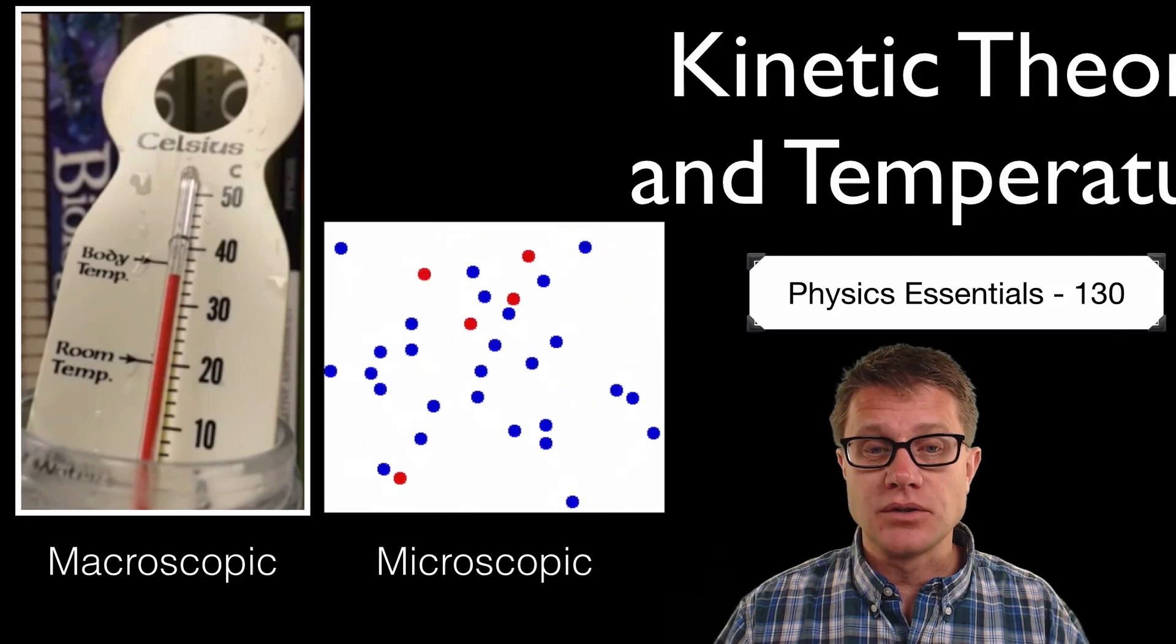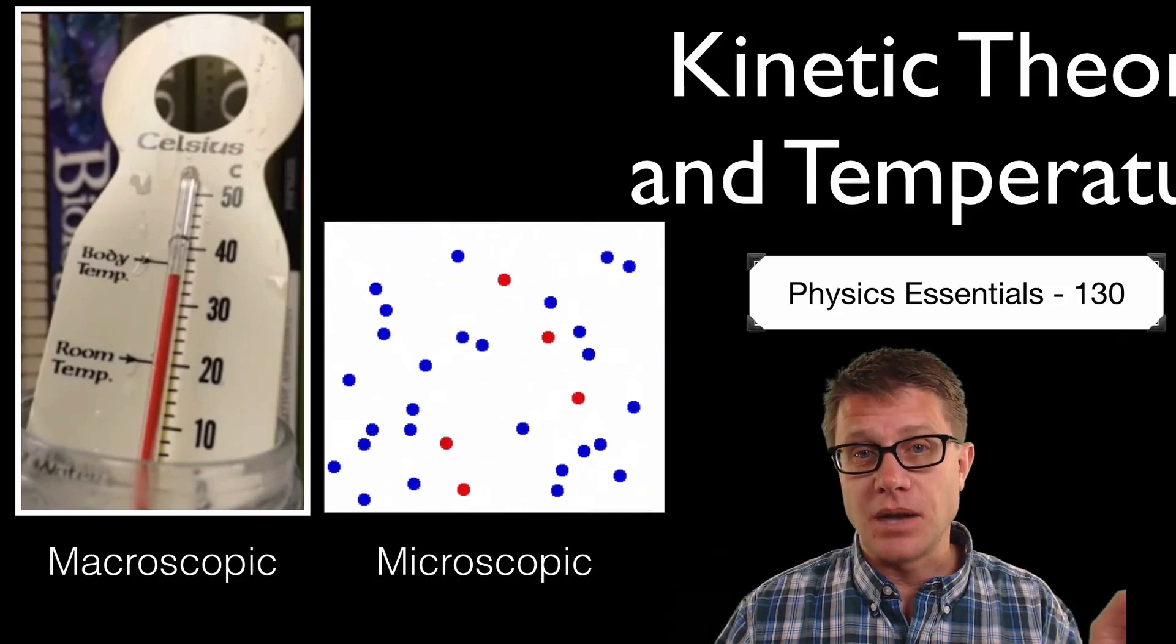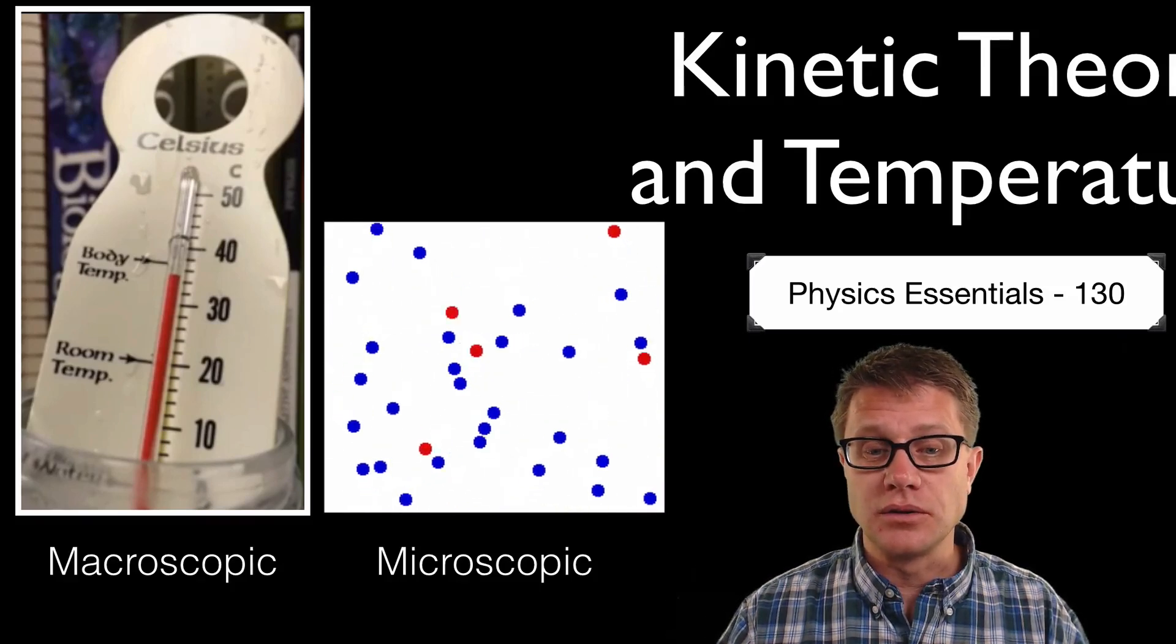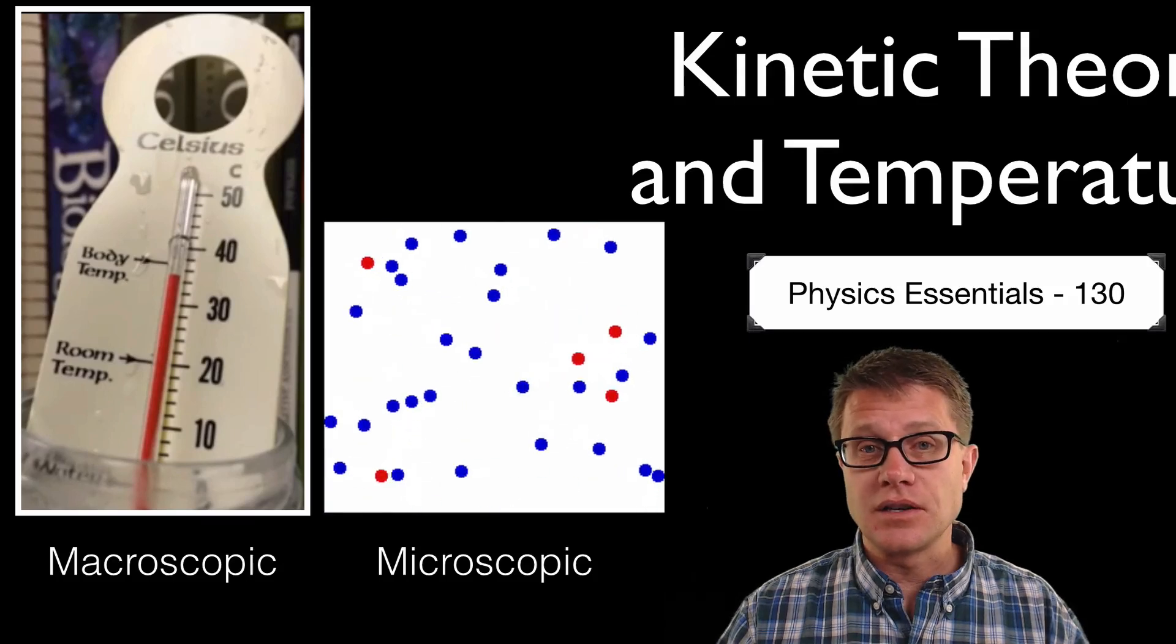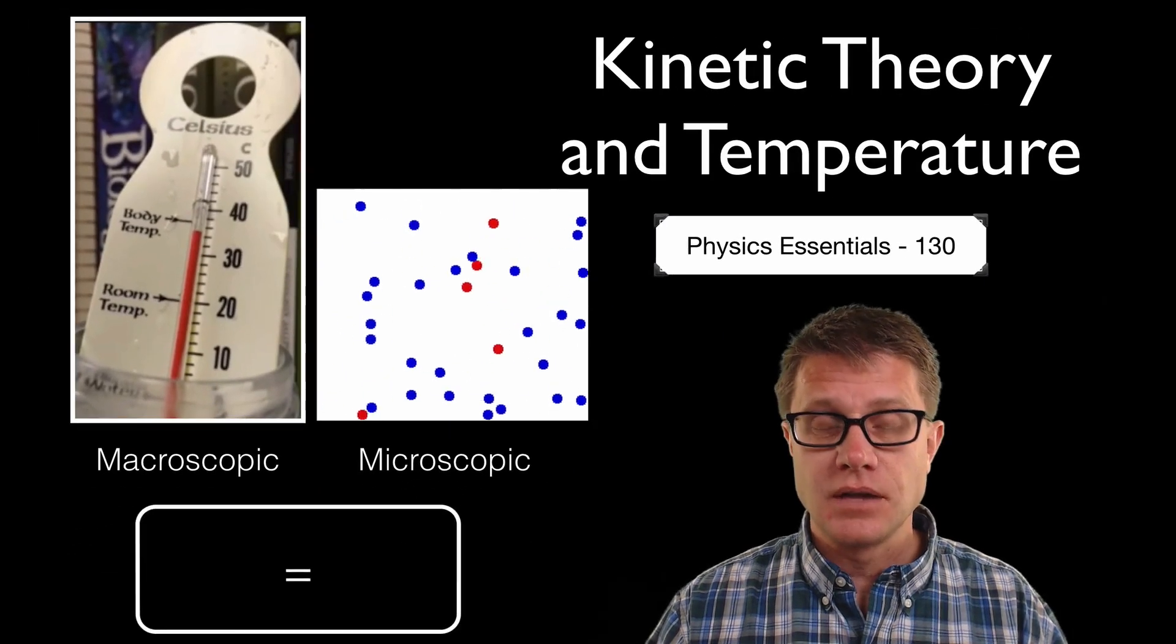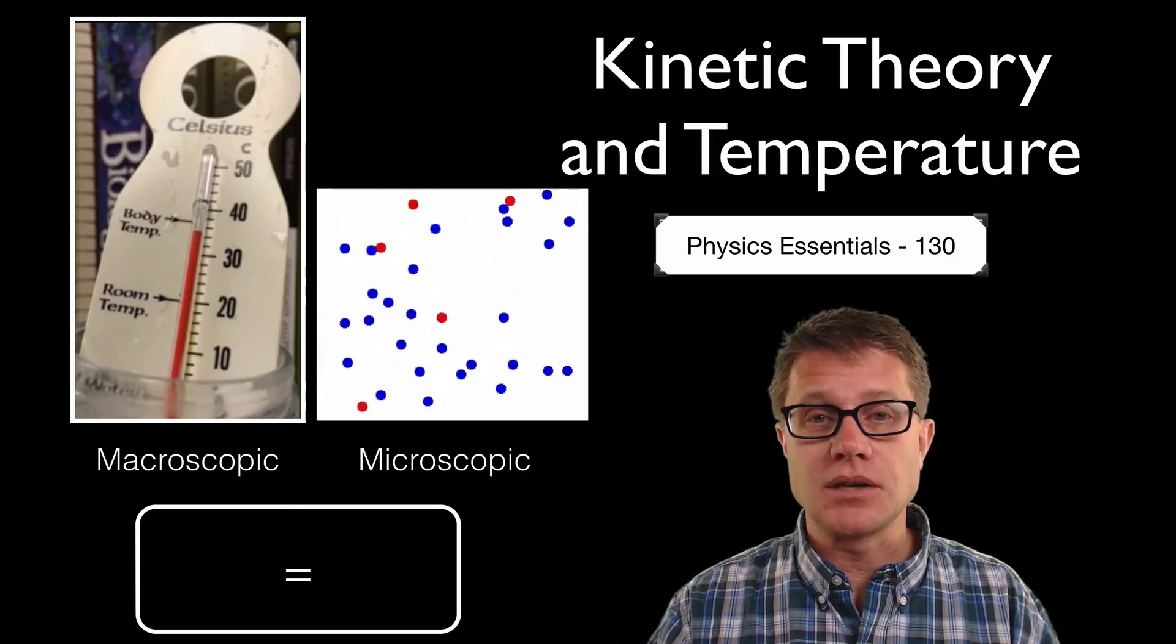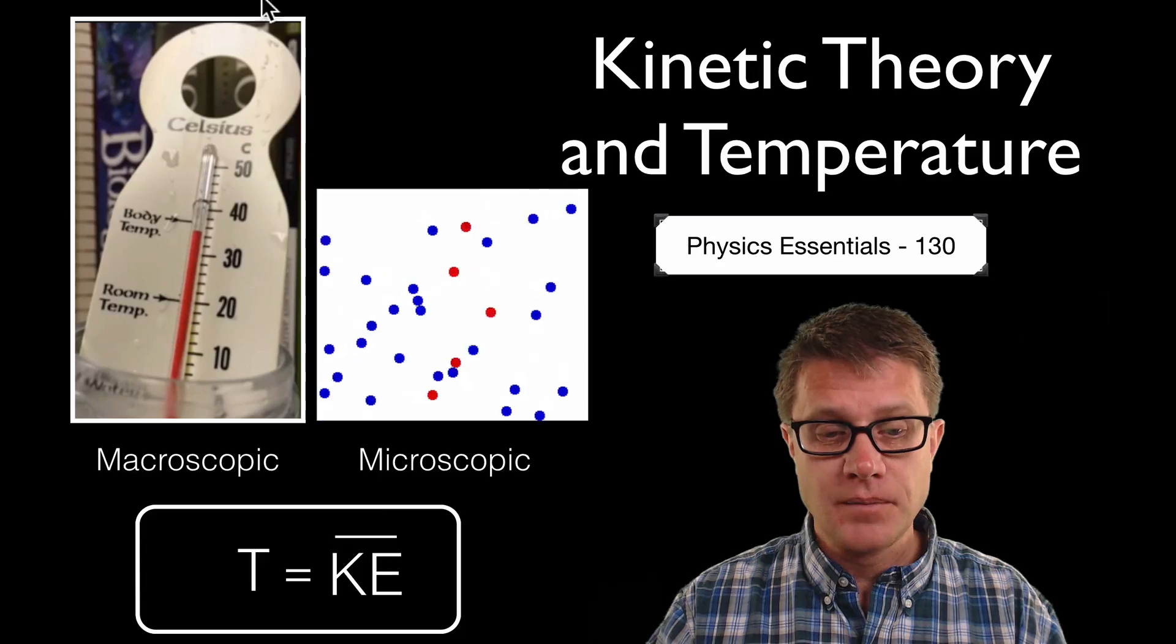So we have all these molecules that are bouncing around. Some have slow velocities, some have fast velocities. But the average kinetic energy of all those molecules is equal to the temperature. The more they are moving, the more their velocities are, the greater the temperature is. Wouldn't it be wonderful if we had an equation that allowed us to move from the microscopic to the macroscopic world? Well, temperature has to be on the left, kinetic energy has to be on the right.